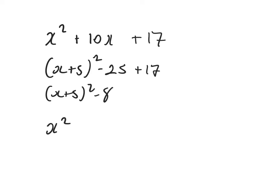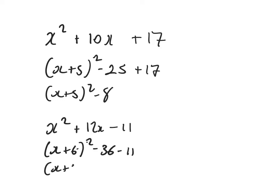Let's try another simple one: x squared plus 12x minus 11. Half the 12 down to 6, x plus 6 all squared. 6 squared is 36, get rid of that and I still need to take away 11. That would be x plus 6 all squared minus 47.